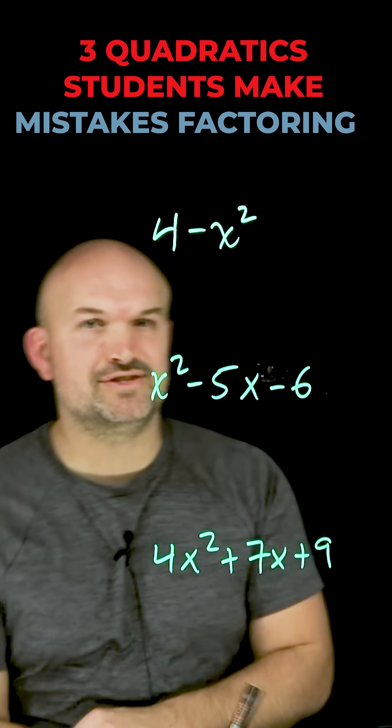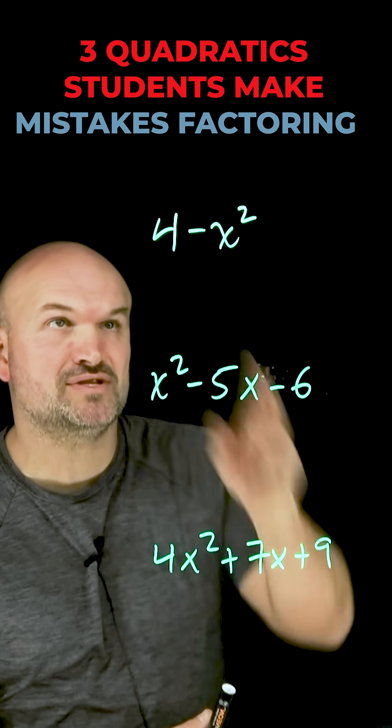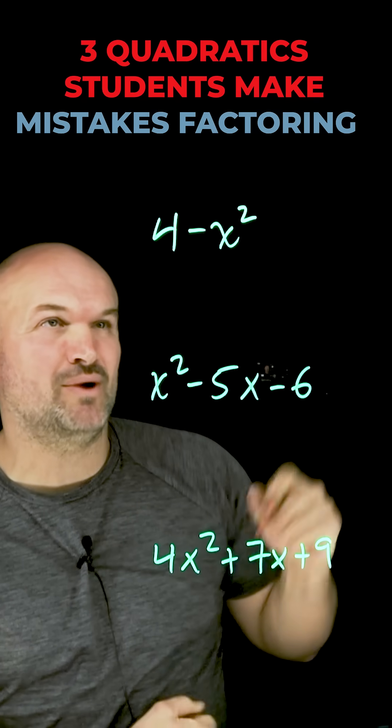Here are three quadratics that I see students making the mistakes with the most. The first one, 4 minus x squared.